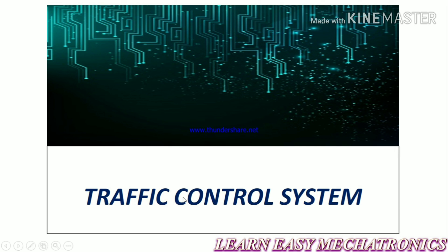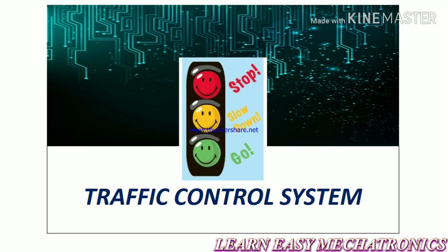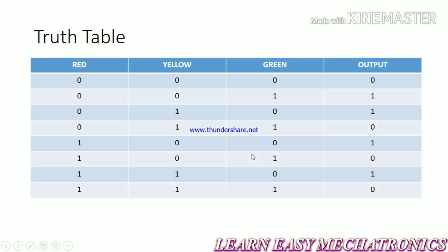In this lecture we are going to design a traffic control system in multi-sim software. As we all know, in a traffic signal, red is for stop, yellow is for slowdown, and green is for go. For three inputs there will be eight possibilities. When the traffic signal is off, the output will be zero. A single light — either red, yellow, or green — can be turned on at a time, or red and yellow can be on simultaneously.